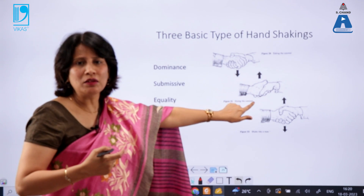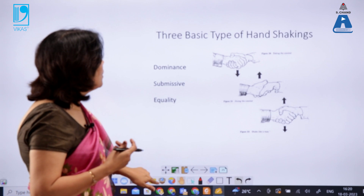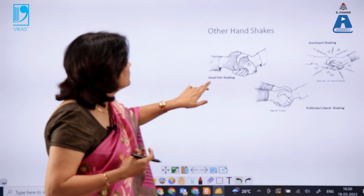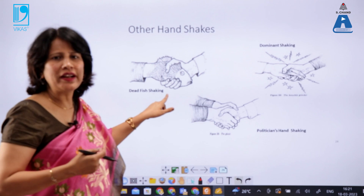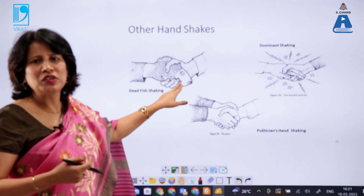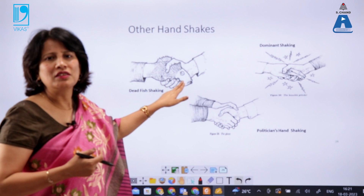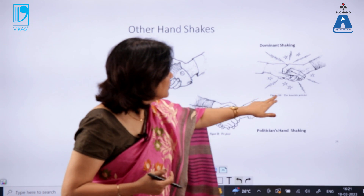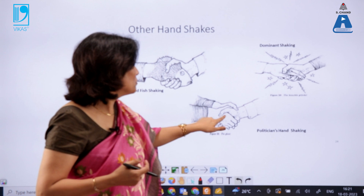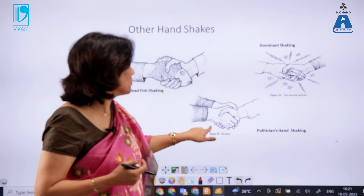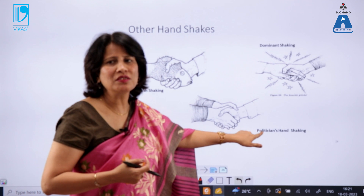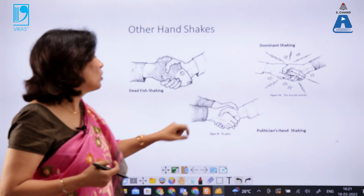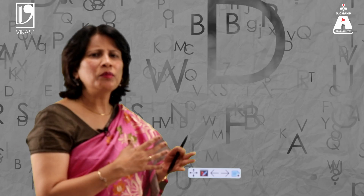There are other handshake types as well. The first is the 'dead fish' shake — there is no energy, it is very laid-back. The second is the 'glove' handshake, where the other hand covers like a glove — commonly used by politicians. The third is the 'knuckle grinder,' where one person tries to dominate the other. By understanding these handshakes we can tell a great deal about someone's personality and also be careful about what message we are sending.